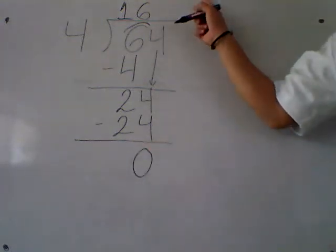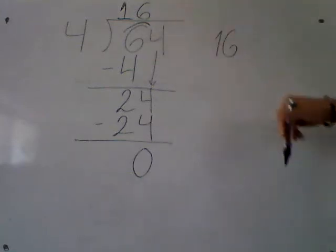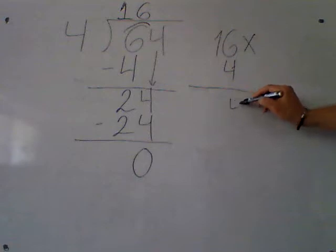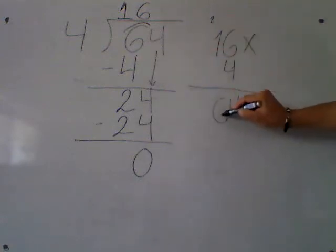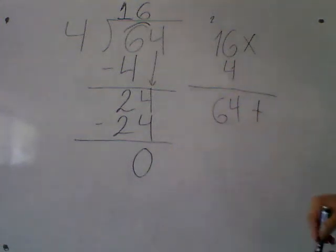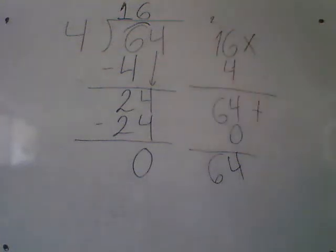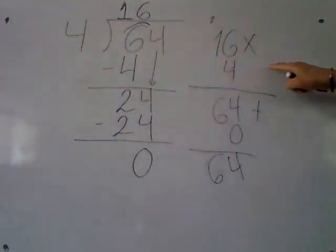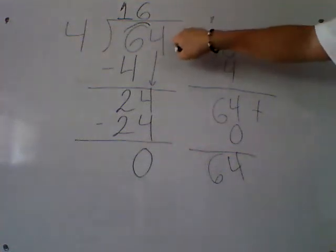Now let's check the division. To check: quotient times divisor. 4 times 6 is 24, carry 2. 4 times 1 is 4, plus 2 is 6. Plus the remainder, which is 0. 64 plus 0 is 64, and my answer is the dividend. Remember: to check, it's quotient times divisor, plus the remainder, and the answer must be the dividend.